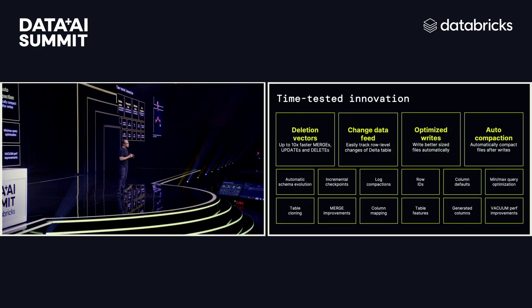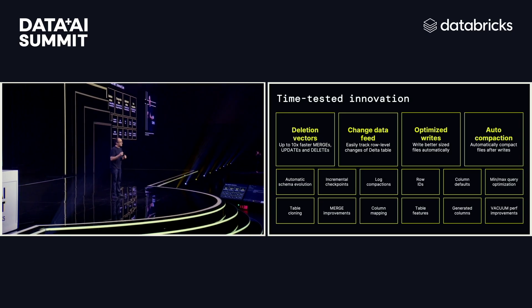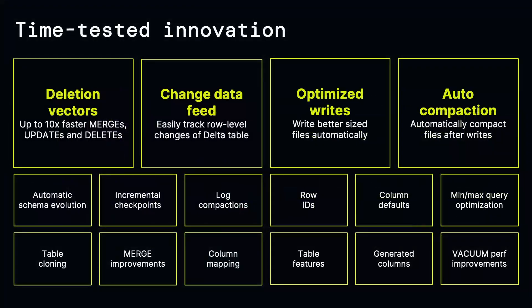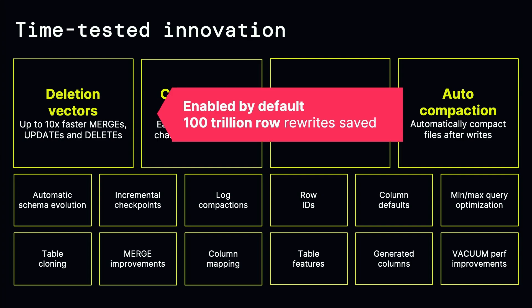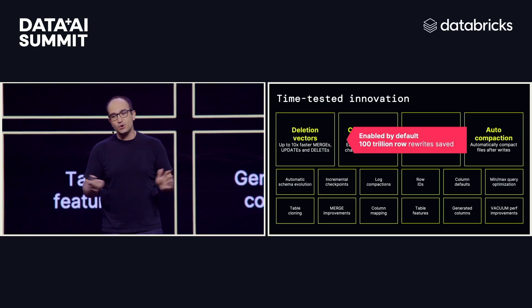These are time-tested, innovative features — things like change data feed, log compaction, row IDs, and deletion vectors. Deletion vectors allow you to do fast updates and DML to your data. In many cases, it's 10 times faster than merge used to be. So if you have a DBT workload or you're doing lots of operational changes to data, deletion vectors make your life easier. There have been over 100 trillion row rewrites saved because of these deletion vector features, and it's enabled by default for all Databricks users.